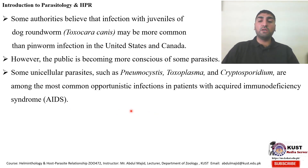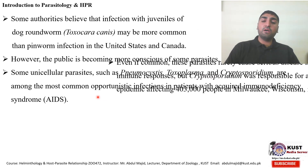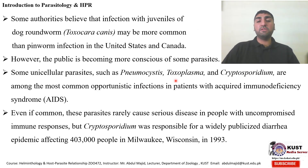People with immunodeficiency, immunosuppression, or who are immunocompromised may be attacked by many opportunistic unicellular parasites, which are very dangerous and sometimes life-threatening — like Pneumocystis and Toxoplasma gondii, which also causes abortions, and Cryptosporidium. We may think these are not very important parasites since they are opportunistic and most of the time attack only immunocompromised individuals.